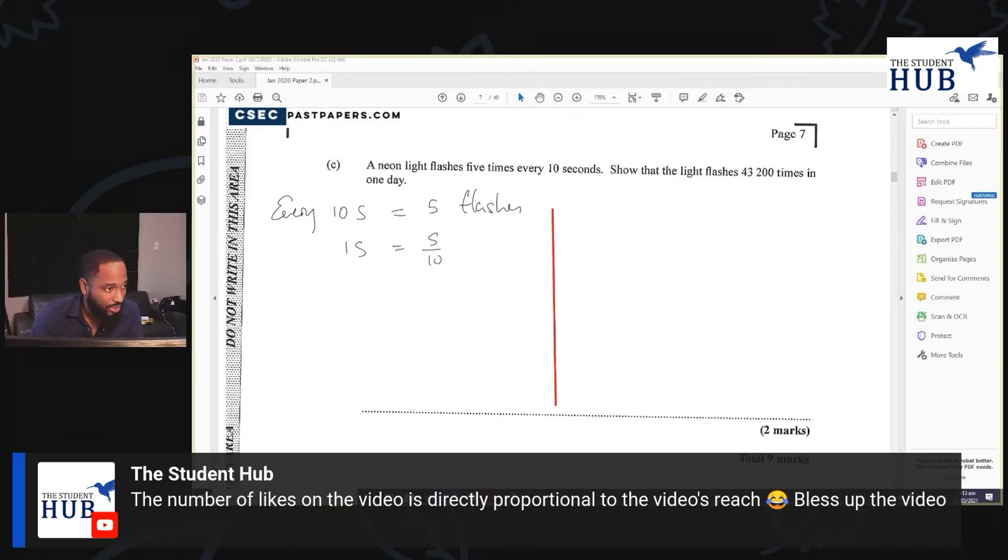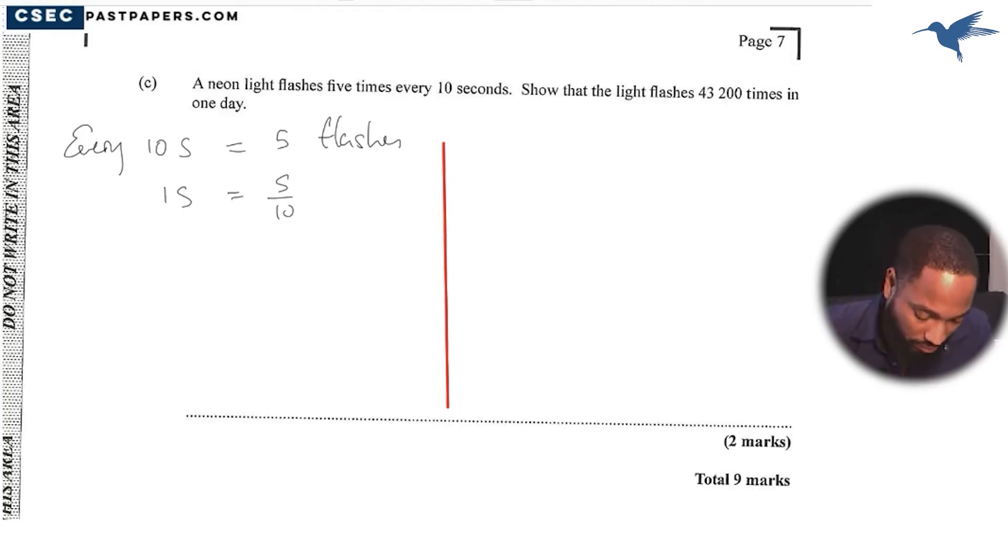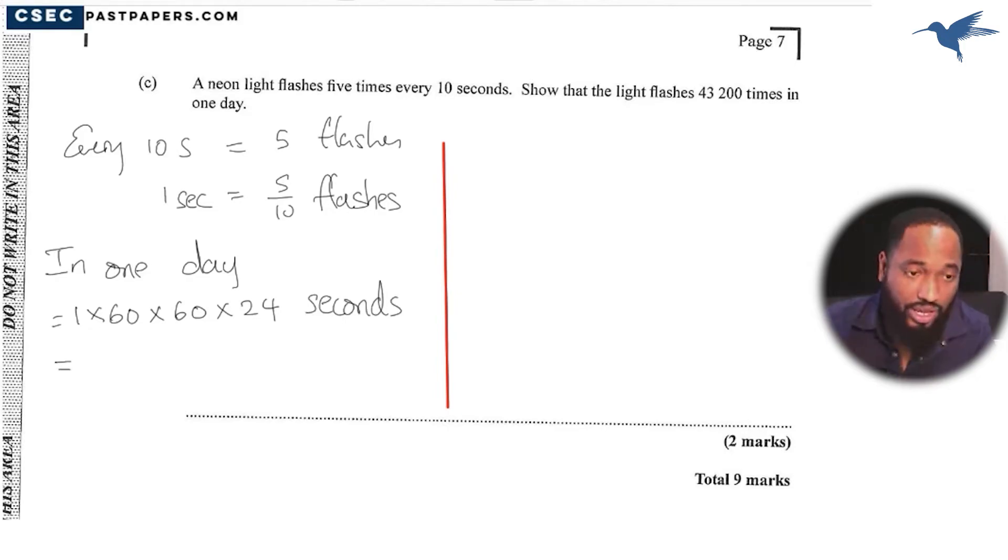So let's say every 10 seconds we have five flashes. So in one second we can expect 5 over 10. Fine, one popular technique. So 5 over 10, this is one second. 0.5 flashes. And how many seconds in a day? Well, in one day we have 60 by 60 times 24.